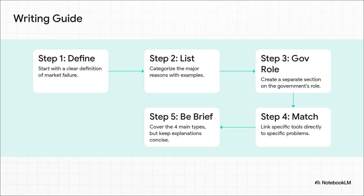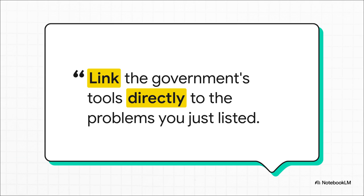Fourth — and this is the secret sauce — explicitly match the government solutions to the specific problems. And finally, say everything you need to say, but keep it concise. No rambling. This is literally the most important piece of advice — it's what separates a good answer from a great one. Don't just have a list of problems and a separate list of solutions. You have to build the bridge between them. Say: 'To solve the problem of negative externalities, governments can use Pigovian taxes.' That direct link is pure gold.